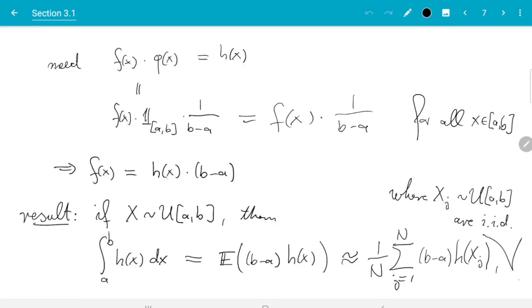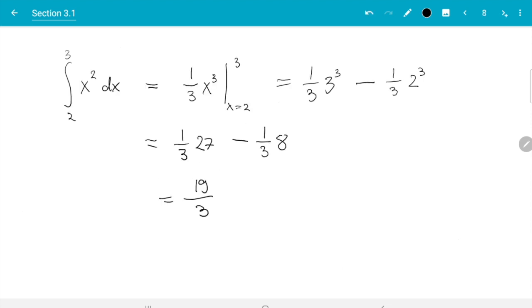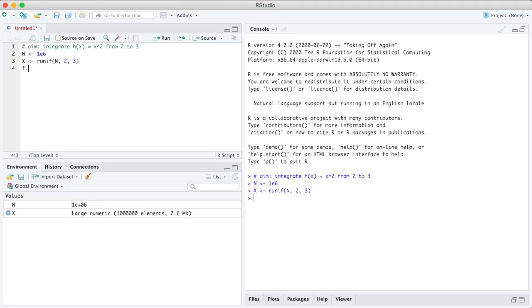Let's just check. f(x) needs to be h(x) times b minus a. So in this case f(x) equals x squared times 3 minus 2. And 3 minus 2 is 1, so f(x) is just x squared. And then the result will be just the average of f(x).